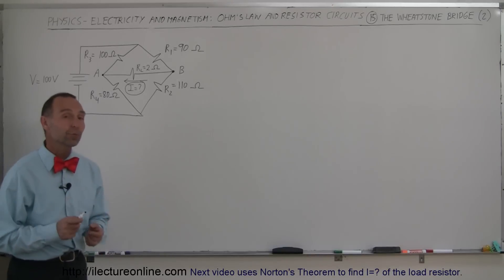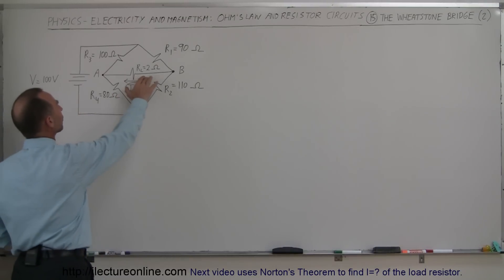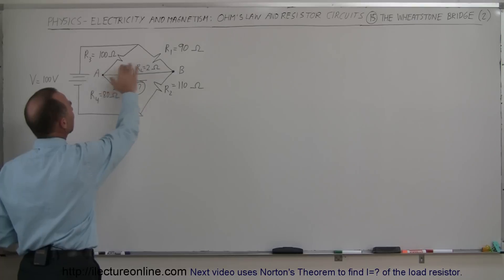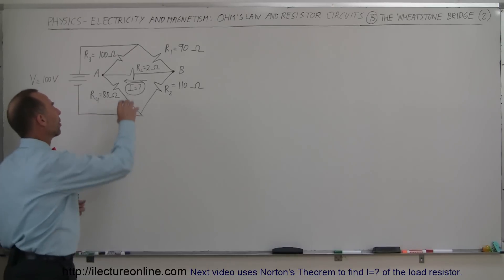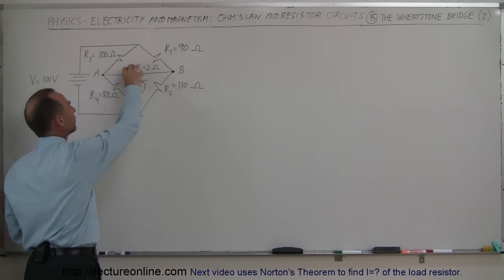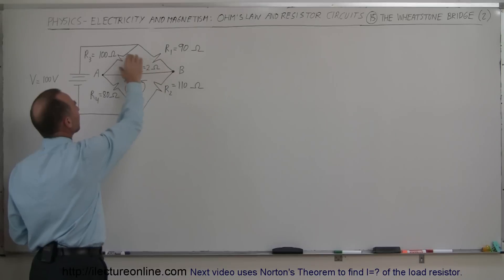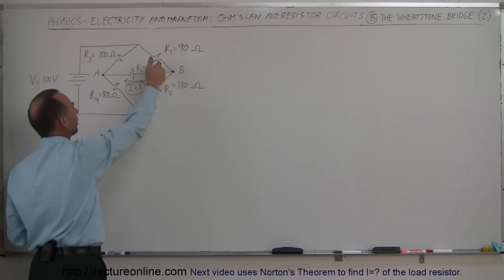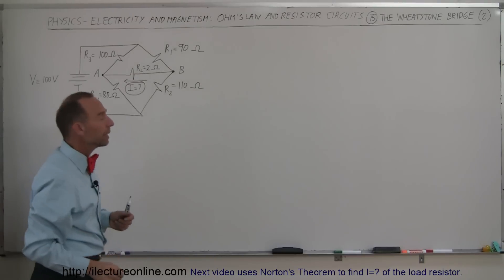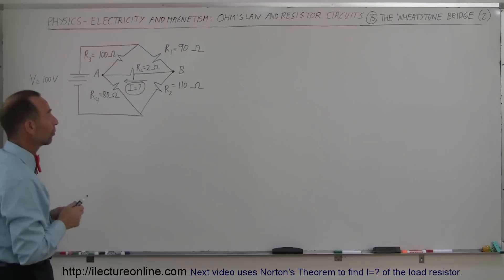We're going to take another look at the Wheatstone Bridge. In this case, what we're going to try and do is find the current across the load resistor which is between A and B — that's the midpoint of the Wheatstone Bridge. In the previous video, we put a small galvanometer there, a small current meter, to equalize the voltages between A and B by adjusting a resistor so that the voltage drop from there to there was equal to the voltage drop from there to there, which caused no current to flow between A and B, which enabled us to find the unknown resistor — one of the functions of the Wheatstone Bridge.